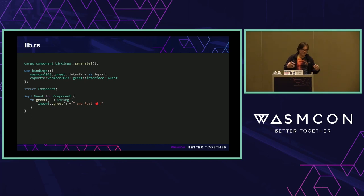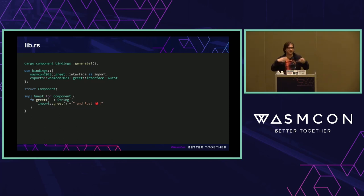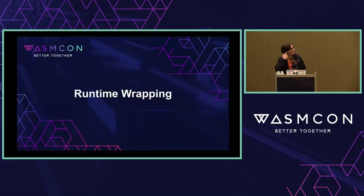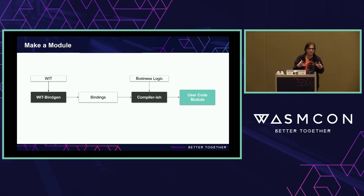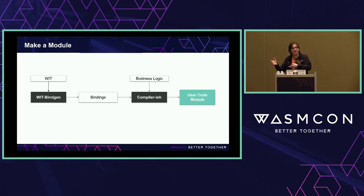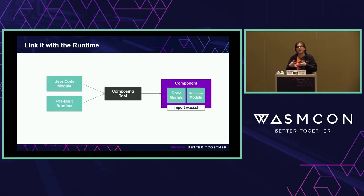This bindgen approach works great if your compiler can already ahead-of-time compile source code to a module. But what if your language is interpreted or has a runtime and garbage collection — all these other facilities that don't just compile directly to WebAssembly? Then we have another approach I'm tentatively calling runtime wrapping. In this process we'll still generally generate bindings in your language that create stubs of the functions you need, and combine your logic to make a code module. But that module might only have the binary data of your code — if it's bytecode like JVM, your module could literally just be a data section that is the bytecode. Either way, you end up composing it with a prebuilt runtime to make a new runnable component.